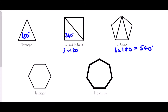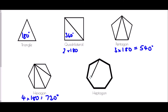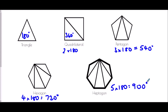With a hexagon, the same process from a single point — one line, two lines, three lines — produces four triangles. So four times 180 gives 720 degrees; the angles in a hexagon add up to 720. A heptagon has seven sides. Drawing in the lines forms five triangles, so five times 180 gives 900 degrees. The interior angles of a heptagon are 900 degrees.